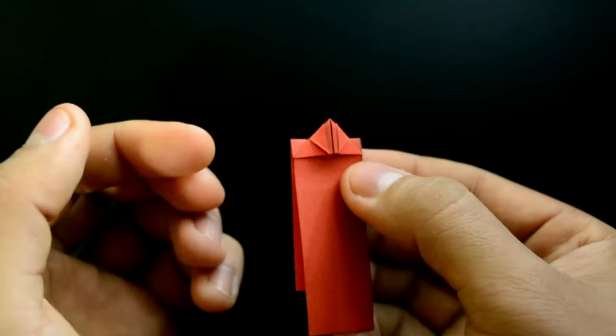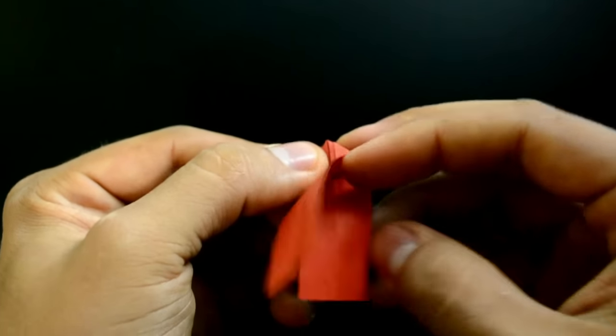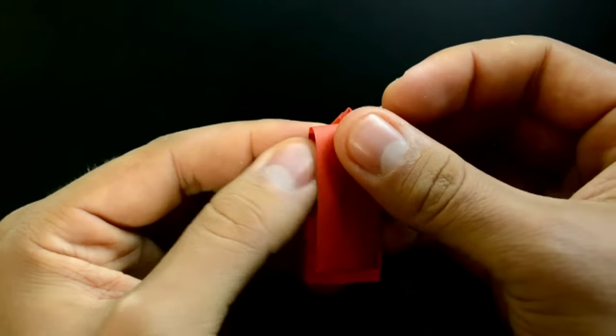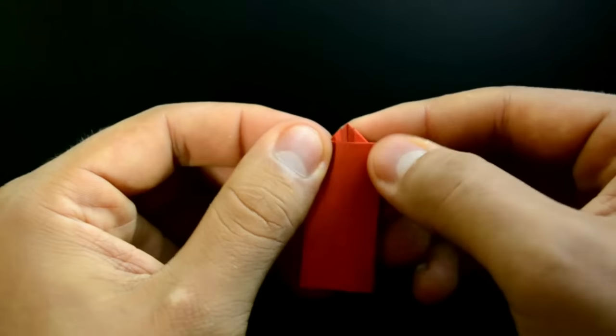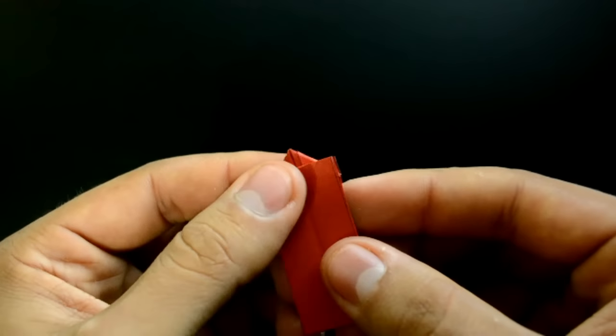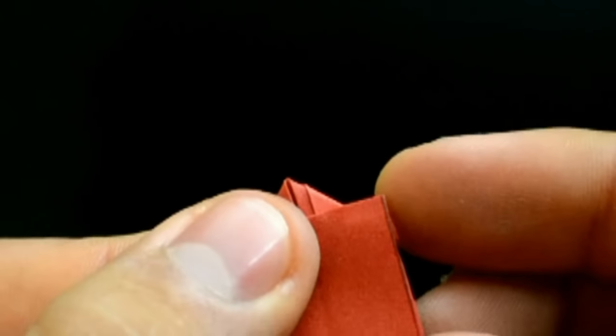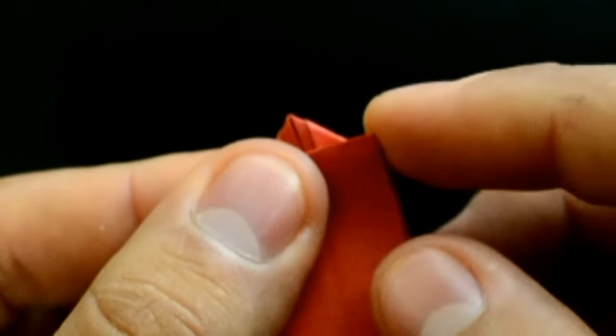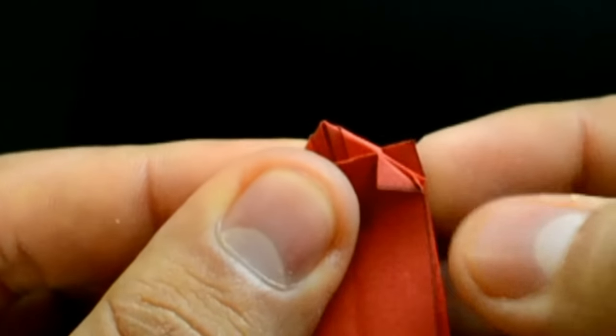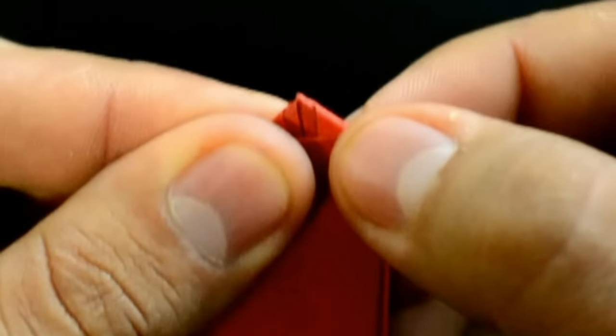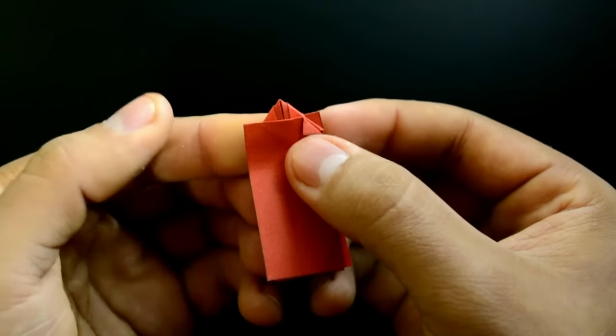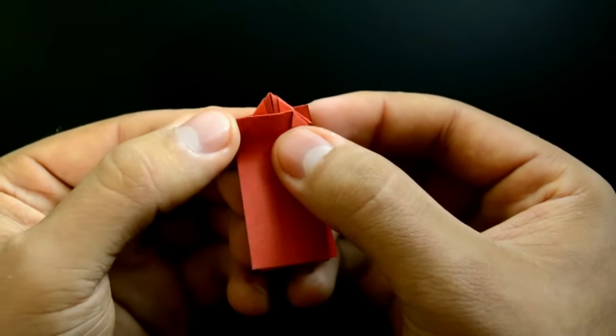Turn over and make the same thing on this side. Fold these little corners here, following the triangle. The other side also.